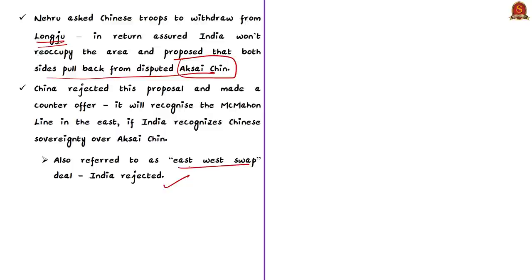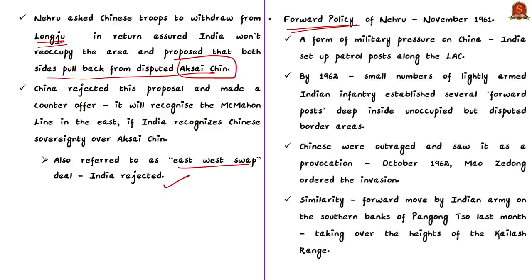Nehru then ordered the forward policy in November 1961 as a form of military pressure on China. Under this policy, India set up patrol posts along the LAC, and by 1962 small numbers of lightly armed Indian infantry had established several forward posts deep inside unoccupied but disputed border areas. A second similarity can be seen as India made a forward move on the southern banks of Pangong Tso last month, with India now controlling many heights not under either country's control before April.